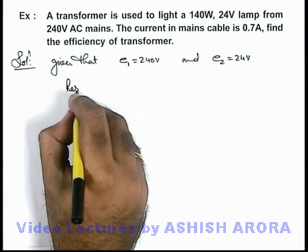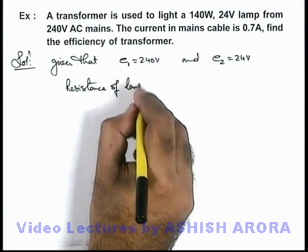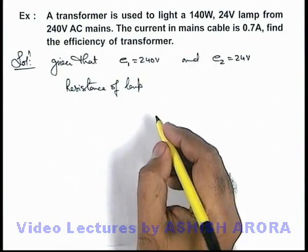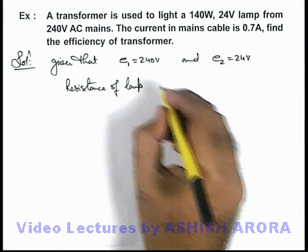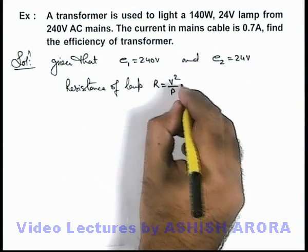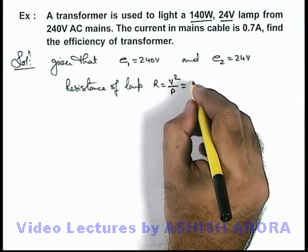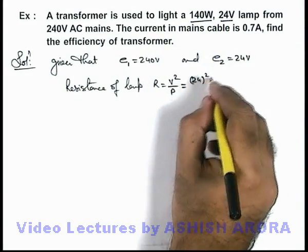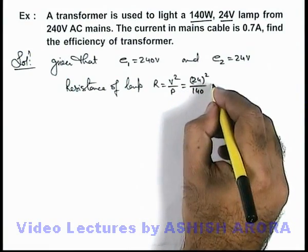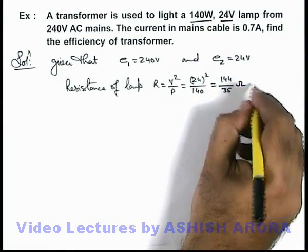If we calculate the resistance of lamp which is being applied across the transformer secondary coil, this R we can write as V squared by P, and it is consuming 140 watt at 24 volt, so this will be 24 squared by 140 of which the value is 144 by 35 ohms.